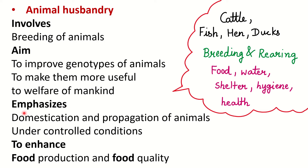Animal husbandry gives importance to the domestication and propagation of animals — breeding them under controlled conditions. We select animals with desired characters, and the goal of animal husbandry is to enhance food production and food quality.